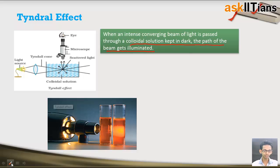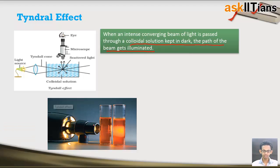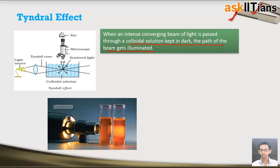See this image — a source of light is being passed through two different solutions. The first one is a true solution, and the second one is a colloidal solution. The path of light is not visible in a true solution, while it is visible in the case of a colloidal solution. So whenever light is passed through a colloidal solution, its path gets visible, and this is known as the Tyndall effect.